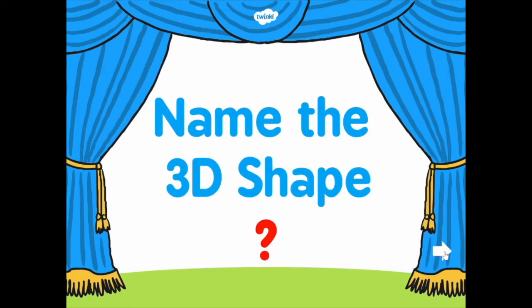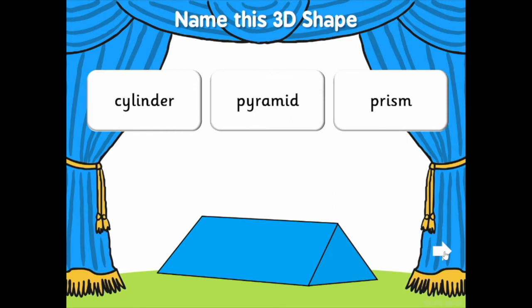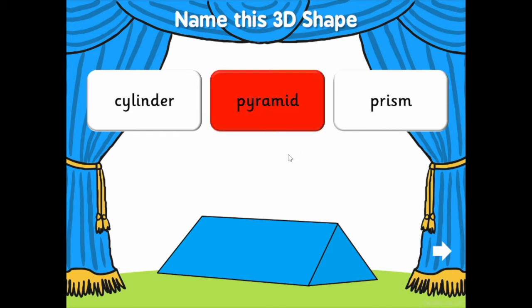Each slide on the PowerPoint shows learners a picture of a 3D shape and three multiple choice options. All you need to do is click on the name that matches the shape. If you get it wrong, it'll turn red, but that's okay — just try again. Once you get the correct answer, click through to the next slide and repeat the process.